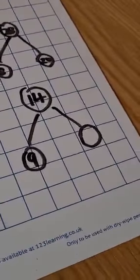Some of you can see it already and some of you might need to do some dots or some drawings to help you. The answer here is 5. 14 take away 9 is 5.